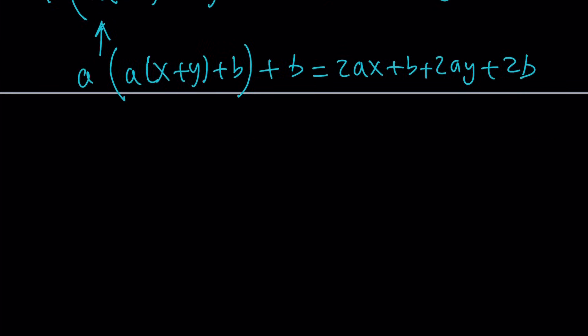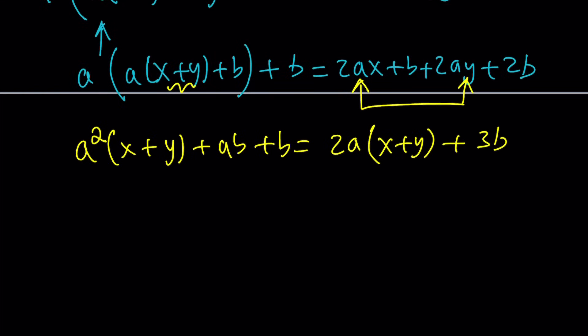So f is going to take this input, multiply by a, and then add b to it. And then if we simplify this, 2ax + b + 2ay + 2b. And now we're going to distribute. So here, what I can do is put these two together because they have a common factor. Let's write this as a²(x+y) + ab + b, and this one as 2a(x+y) + 3b.